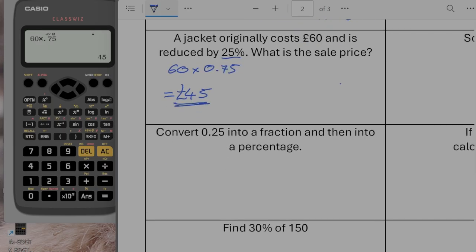Convert 0.25 into a fraction and then into a percentage. So 0.25 as a fraction would be 25 over 100, which is going to give you 1 over 4. So that would be it as a fraction. And as a percentage, 25 is going to be 25%. So there we go. Fraction and percentage.